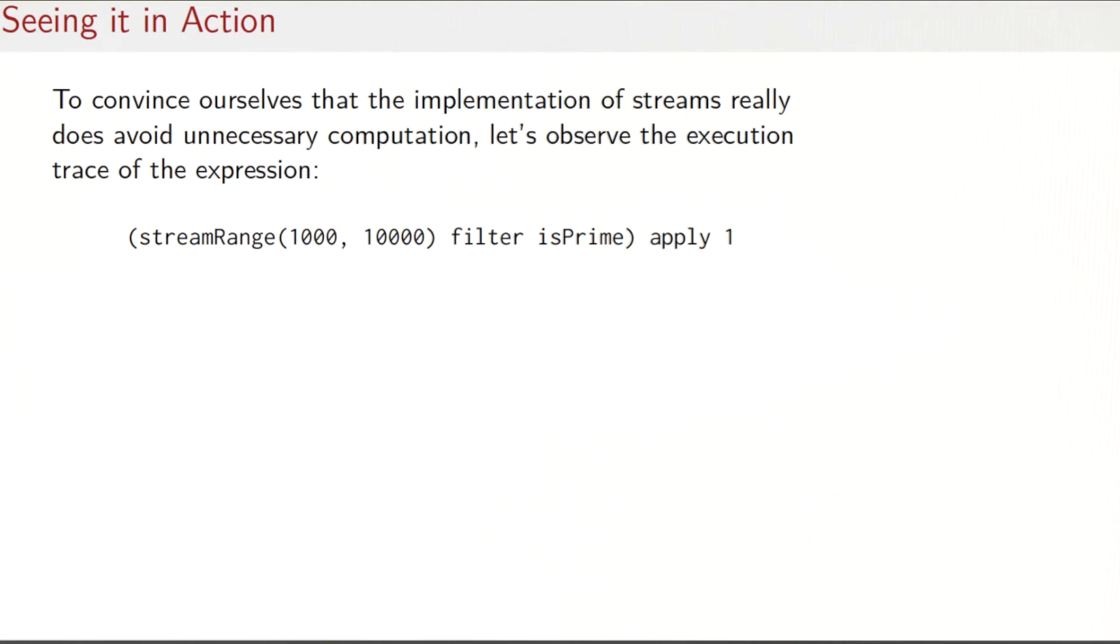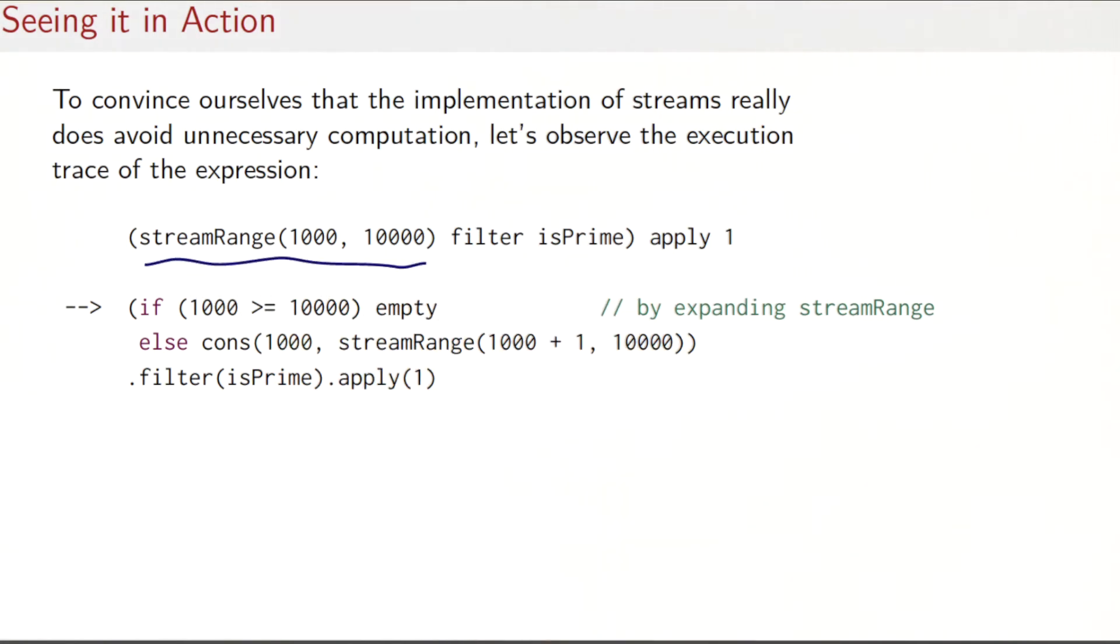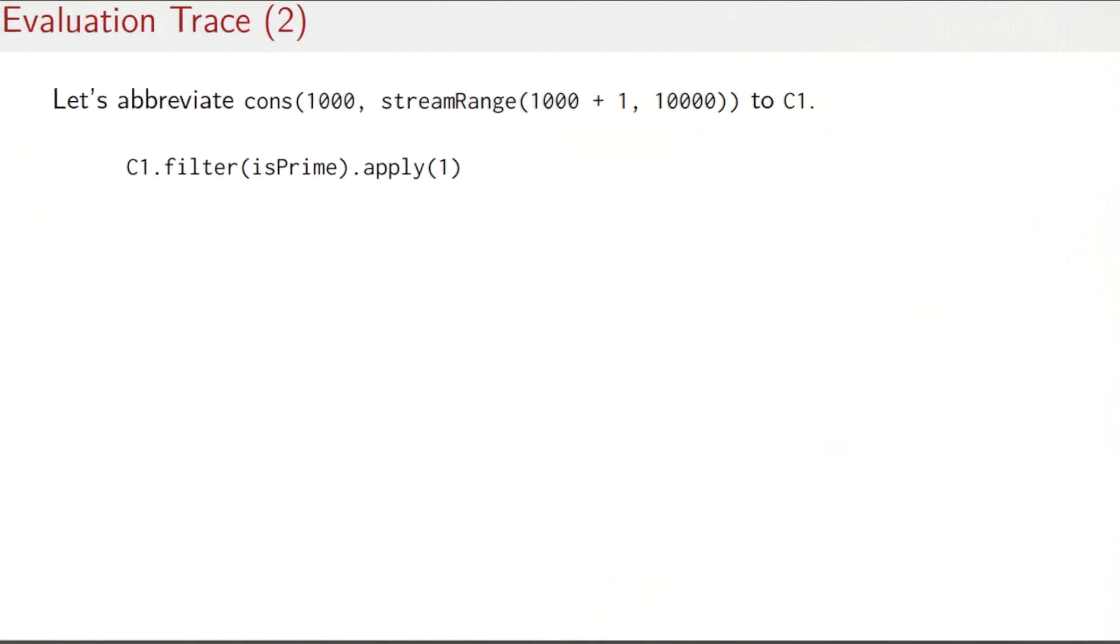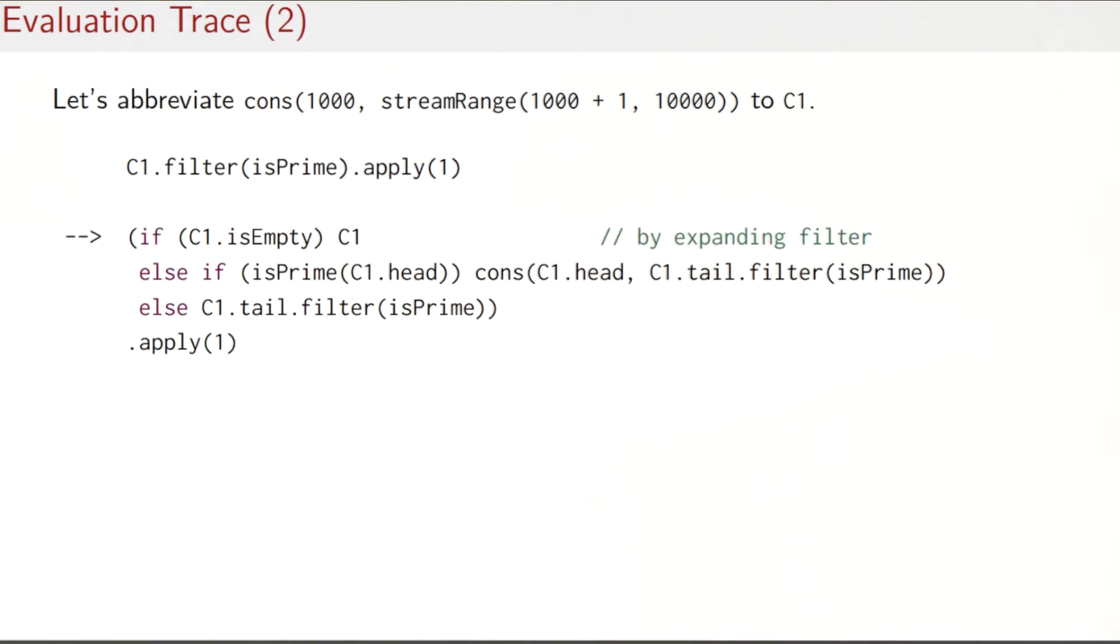Let's start reducing that and see what happens. So the first thing that happens here is that we have to expand streamRange. I've given you the expanded definitions with the actual parameters replacing the formal ones. The next thing that happens is that the if-then-else is evaluated, so that would give me the cons expression that we see here. Let's abbreviate this expression with the cons to C1, so what I would have is C1.filter(isPrime).apply(1).